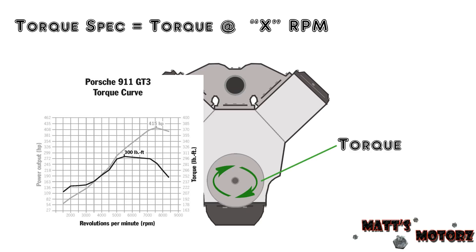Here's an example of what I mean. This is a torque curve for a Porsche 911. You can see that the torque changes as the RPM goes up and up, and it reaches a peak at around 5500 RPM. So the spec for max torque for this engine would read 300 foot-pounds at 5500 RPM.